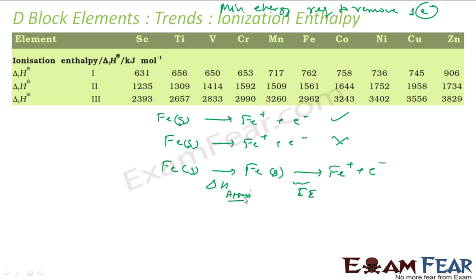So if we talk about nth ionization energy, it refers to the minimum amount of energy required to remove electrons from the species which already has N minus 1 charge. For example, if you talk about second IE,